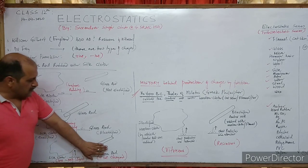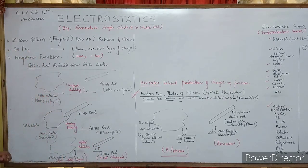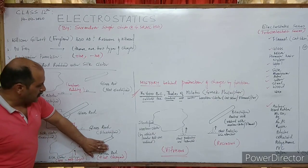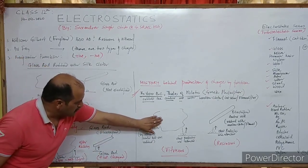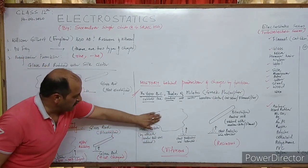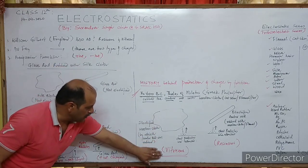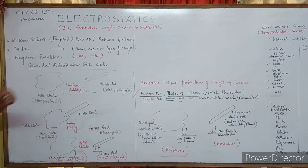The glass rod in Latin is called 'Vitreous' — that is why the electrified property obtained by woolen cloth is also known as Vitreous, which was named later on.